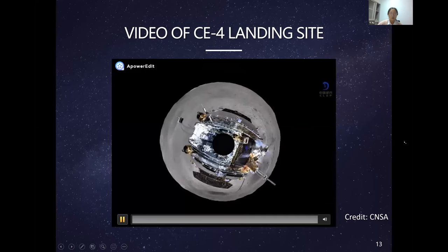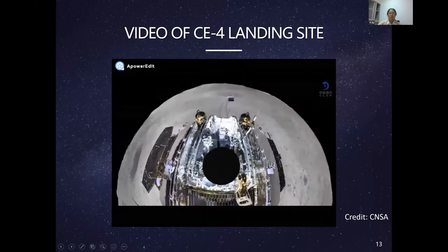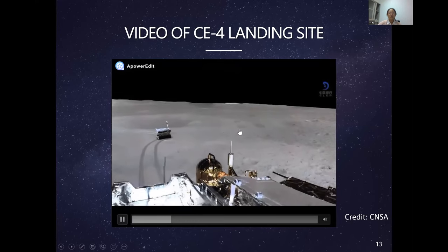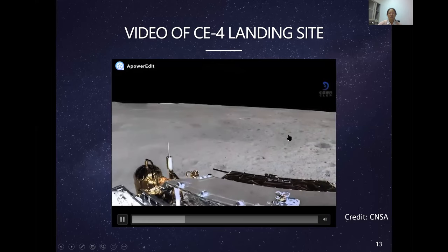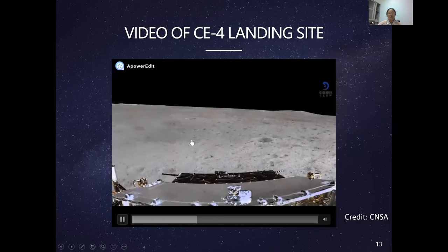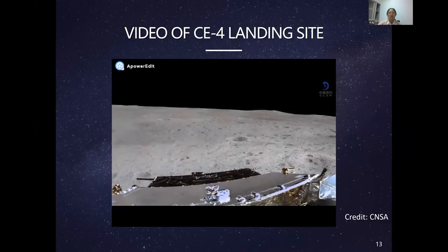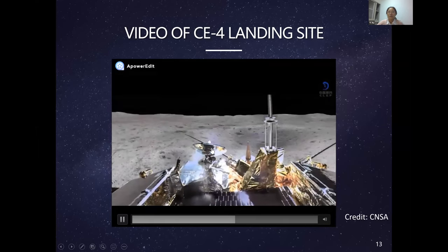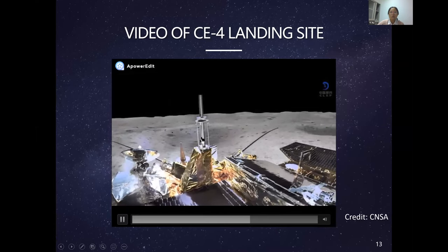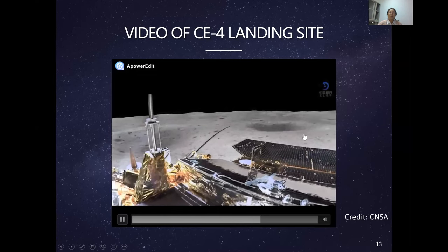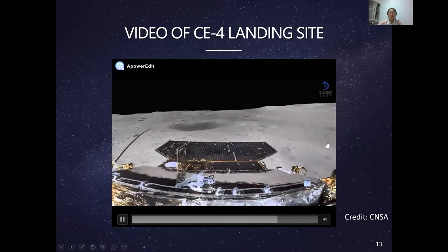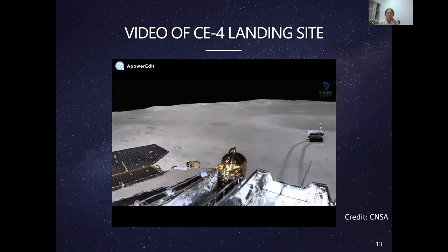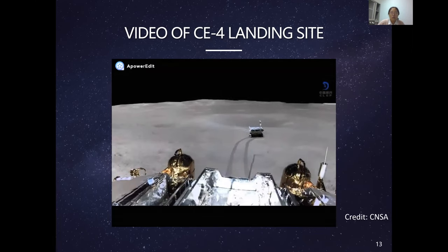In contrast, the Chang'e 4 landing site shows a very flat and smooth surface with no large meter-sized boulders visible in the middle. This is consistent with the area being a very old geological unit. While impact craters are still visible — some degraded — there are no large rocks or rough surfaces like those at the Chang'e 3 site, making the two landing sites visually very different from each other.